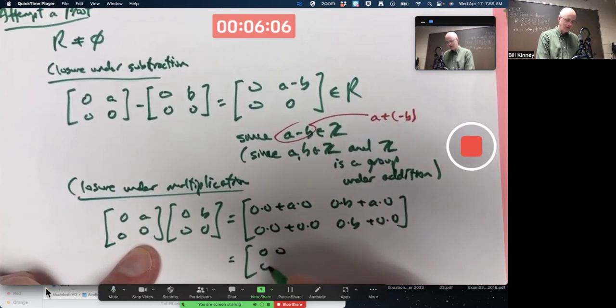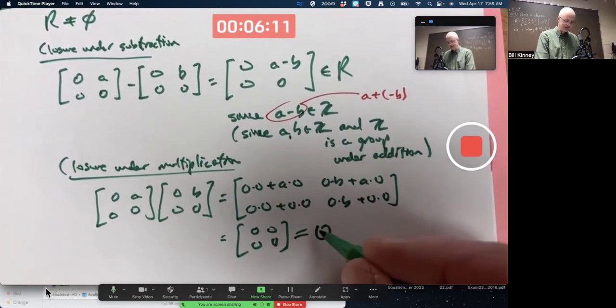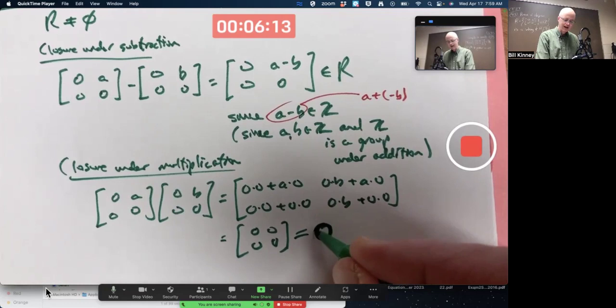yes, you all saw you got the 0 matrix. We could call this big 0 maybe if we like. Make it extra bold face. That's the 0 matrix.